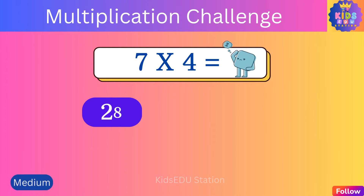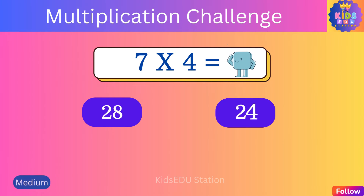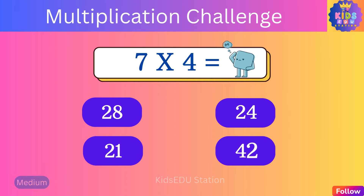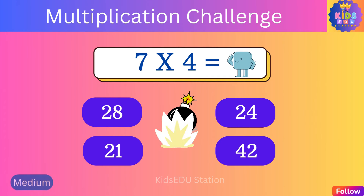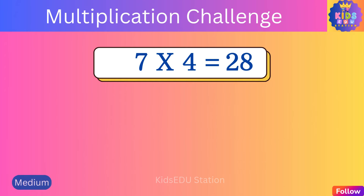What is seven times four? Twenty-eight, twenty-four, twenty-one, forty-two. Seven times four is twenty-eight.